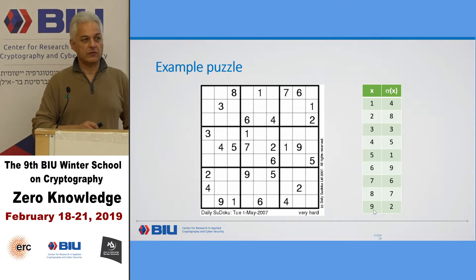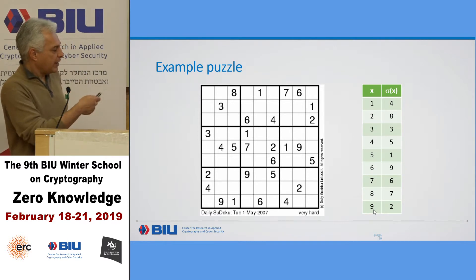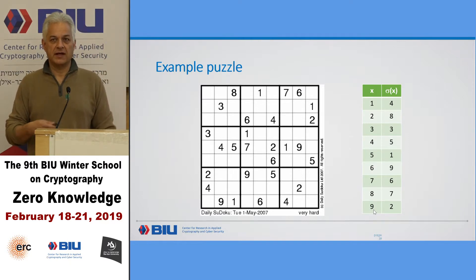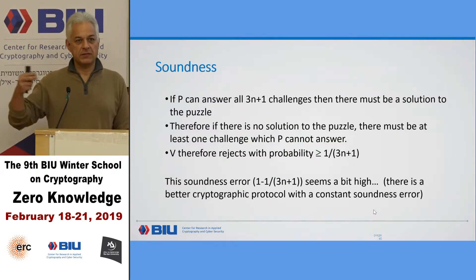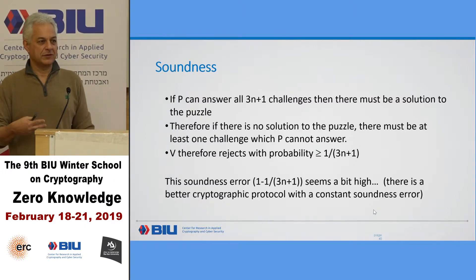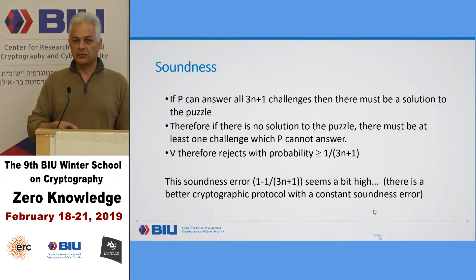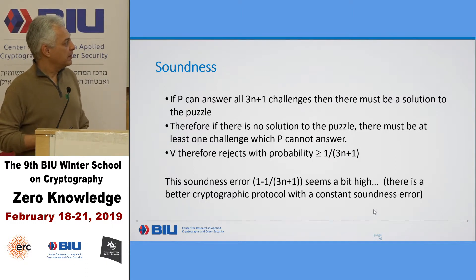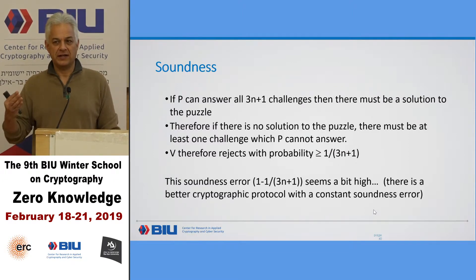Obviously, if the prover knows how to solve the puzzle, he can succeed in the proof. The question is about soundness: what happens with a prover who doesn't know how to solve the puzzle — can he prove that he knows the solution? If the prover can answer all 3N+1 challenges, then he knows how to solve the puzzle. Therefore, if the prover doesn't know the solution, there's at least one challenge the prover will not know how to answer. The cheating prover will be caught with probability 1 over 3N+1. If N is 9, this is 1 over 28.